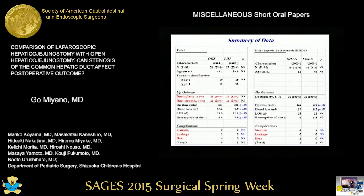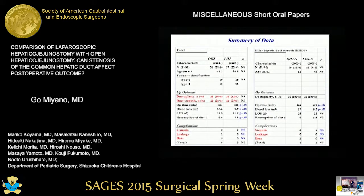There were 27 patients in LHJ and 31 in OHJ, and demographics were similar between groups. HHDS was present in 32% in OHJ and 37% in LHJ. There were significant differences in mean operative time, mean blood loss, recommencement of enteral feeding, and hospital stay.